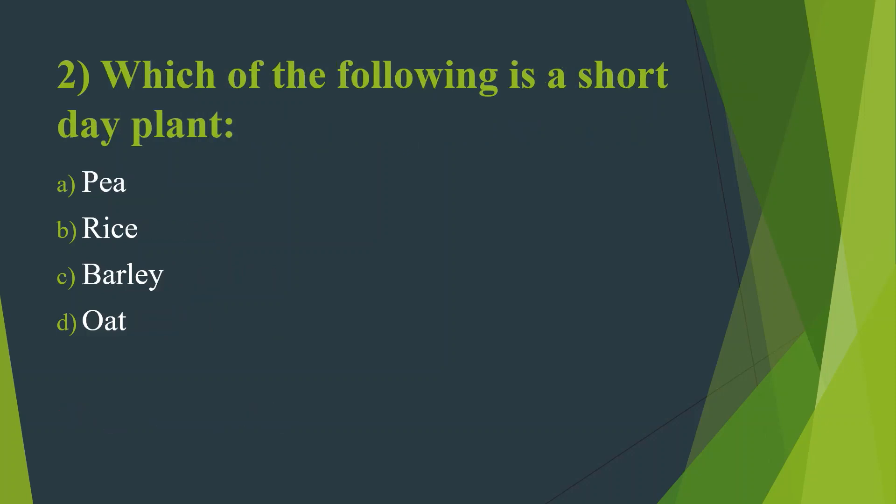Second question: Which of the following is a short day plant? Option A, Pea. Option B, Rice. Option C, Barley. Option D, Oats. Answer is Option B, Rice.